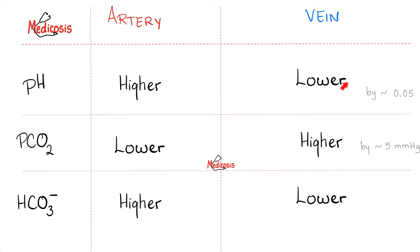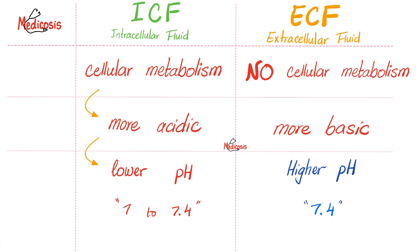Therefore, veins have a lower pH. Similarly, the metabolism happens inside the cell, in the intracellular fluid. Therefore, the inside of the cell is more acidic than the outside. If the inside of the cell is more acidic, it will have a lower pH.